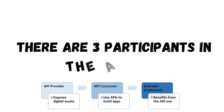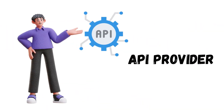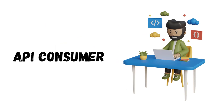Let's understand first who are the three participants of the API economy. First, the API provider. The API provider chooses which business data assets to make available as an API and is responsible for driving the success of the API. The next is the API consumer, or sometimes called the developer — the developer who uses an API under design terms and conditions provided by the API provider.